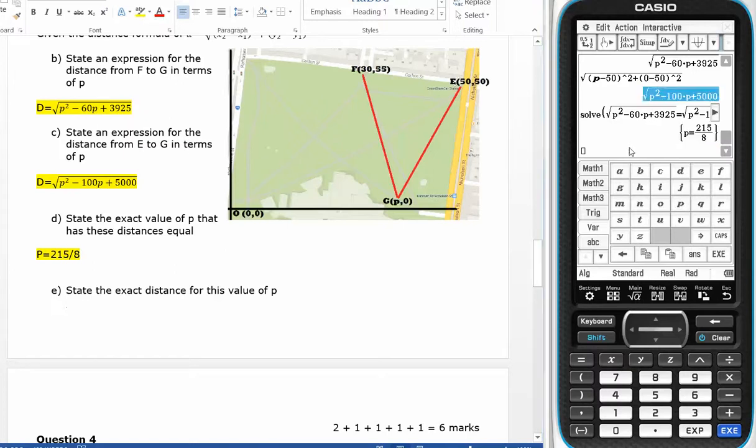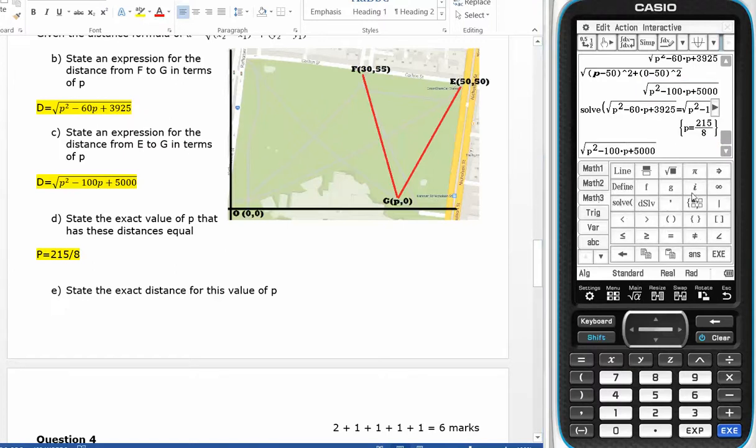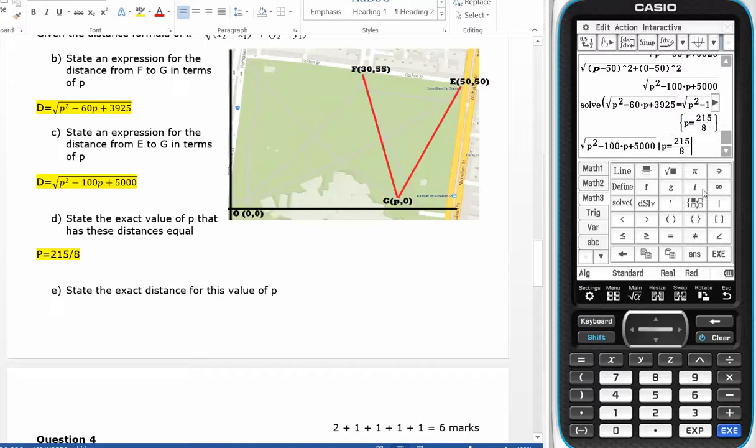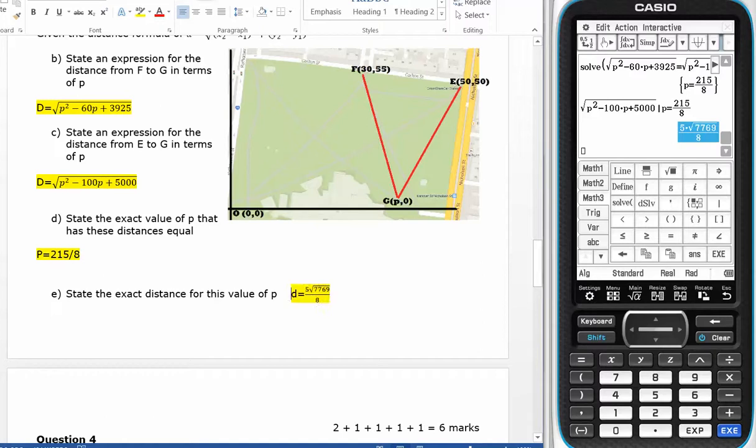So if I take one of them and substitute the given P equals that value, that gives me an answer for D. And there's your answer for D. Thank you.